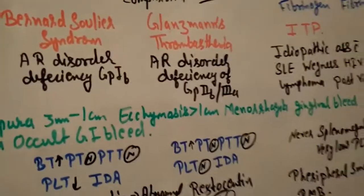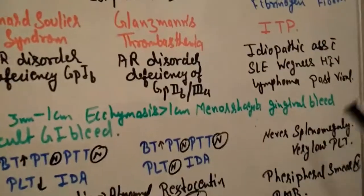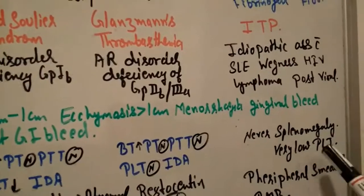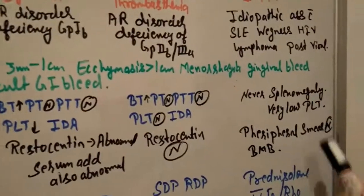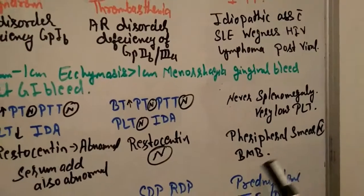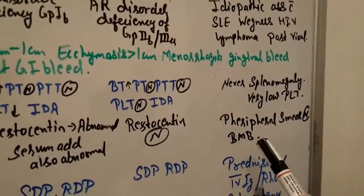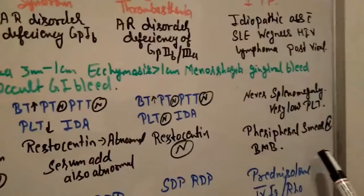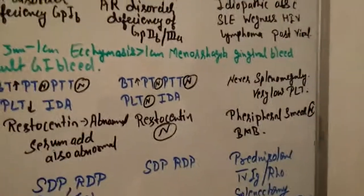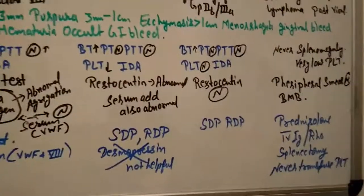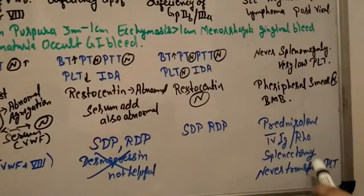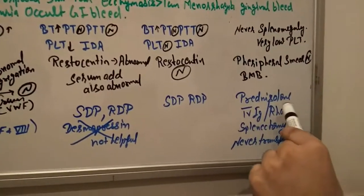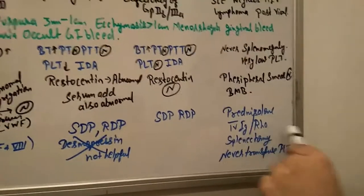But there is never splenomegaly in idiopathic thrombocytopenic purpura. Platelet count is very low. If you do a peripheral smear, it's normal. We find ITP mainly in children. Final diagnosis is done by bone marrow biopsy. For treatment, never transfuse platelets here—never ever transfuse platelets. Splenectomy is helpful. We can give prednisolone, IV immunoglobulin, or Rho factors.